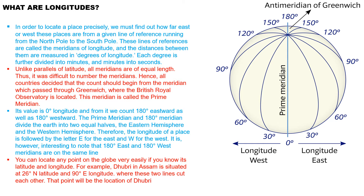The prime meridian and the 180 degree meridian divide the earth into two equal halves — the eastern hemisphere and the western hemisphere. The longitude of a place is followed by the letter E for east and W for west. It is interesting to know that 180 degree east and 180 degree west meridians are on the same line. In the diagram, you can see the prime meridian with 30 degree and 60 degree lines going eastward and westward.